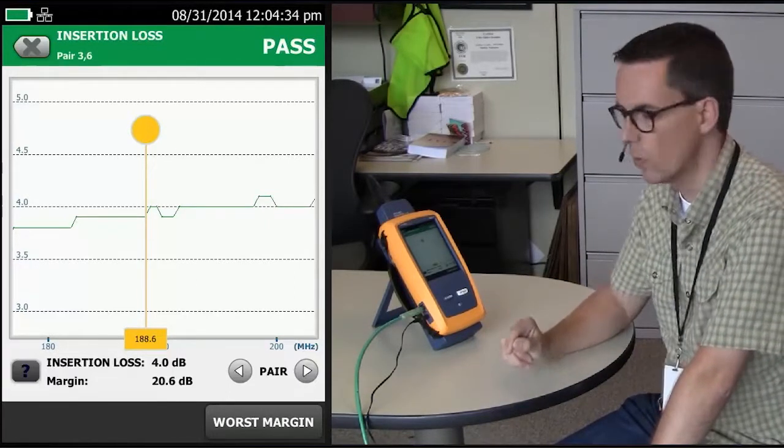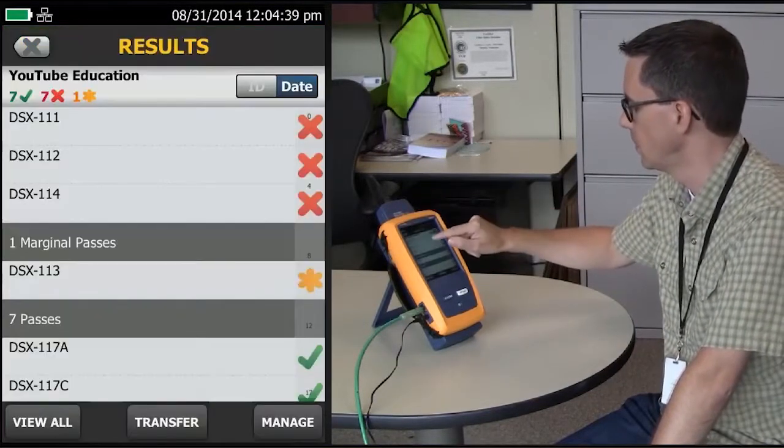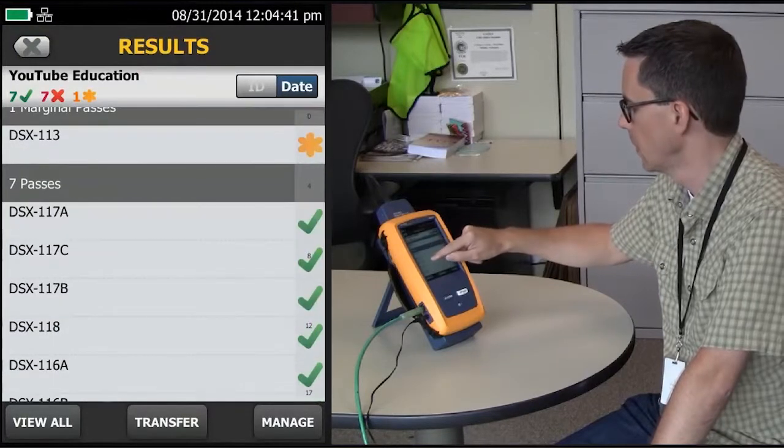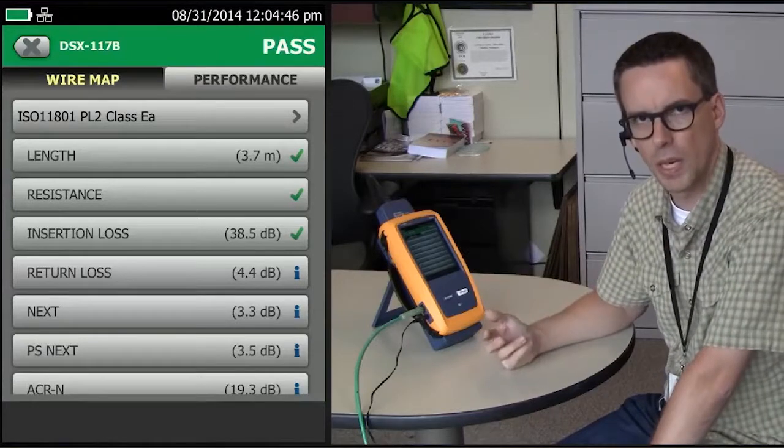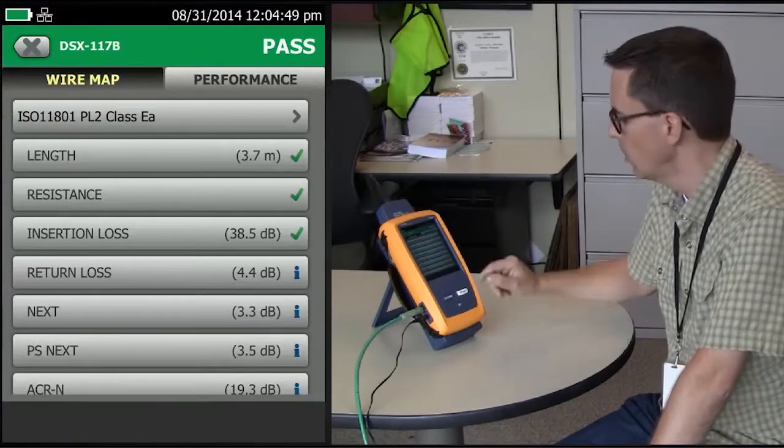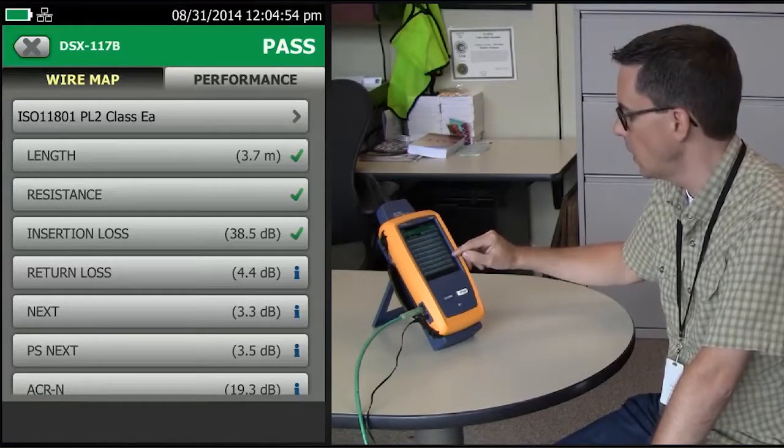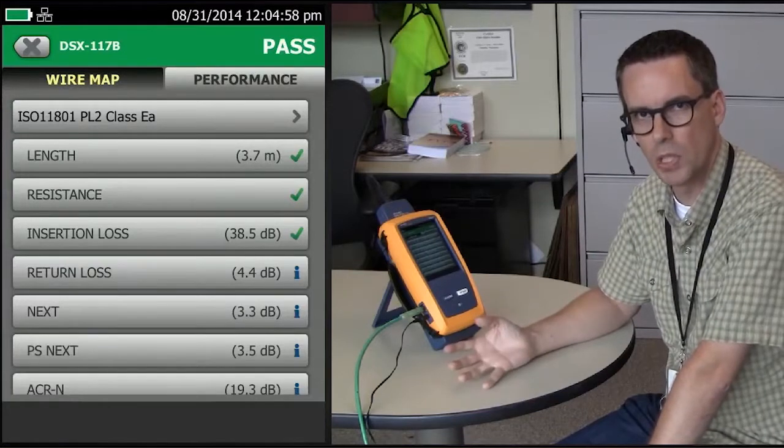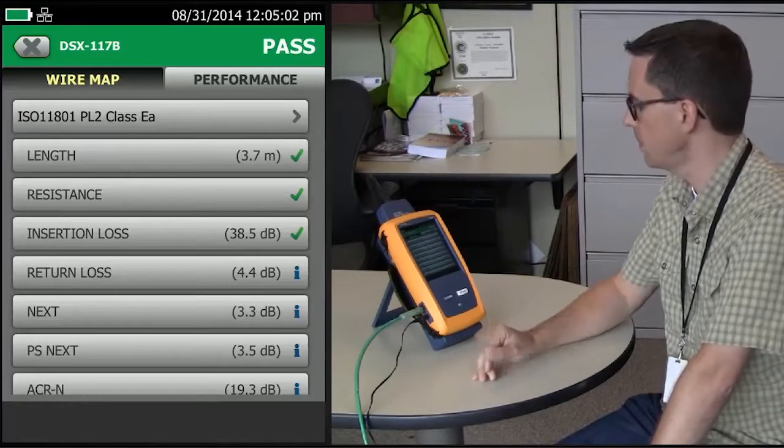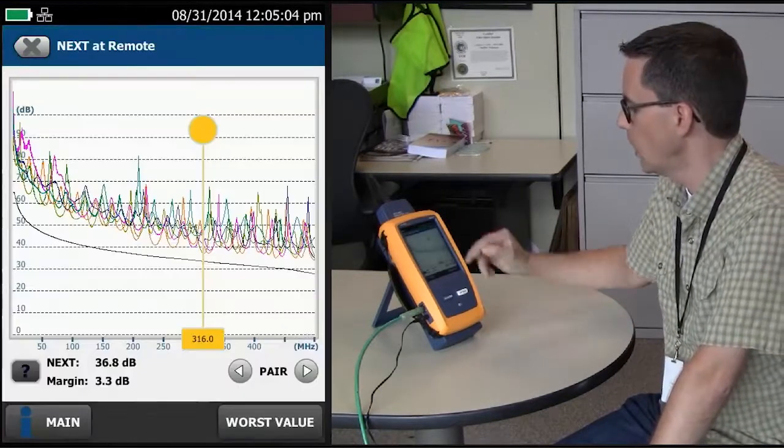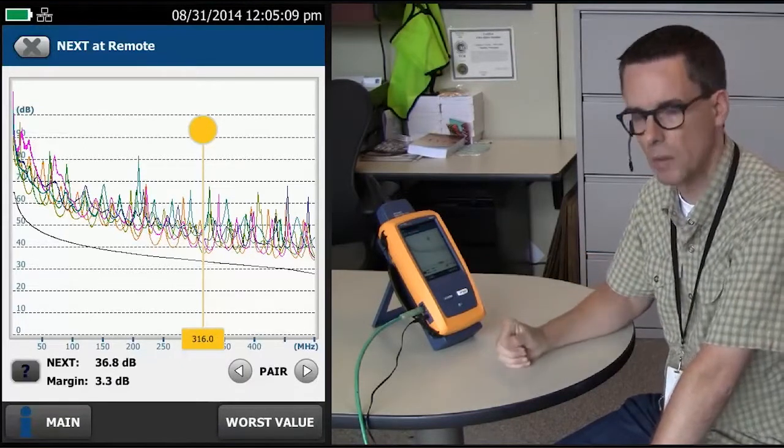Now there's an interesting quirk with this 4 dB rule. Let me go and look at another test result. When we look at this result here, we see the crosstalk has a margin of 3.3 dB. But you'll notice there's an eye next to it, not a tick mark, and that's because if the insertion loss never reaches 4 dB, then you end up ignoring the entire near-end crosstalk measurement.